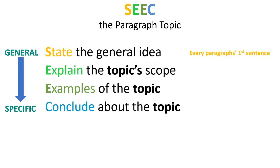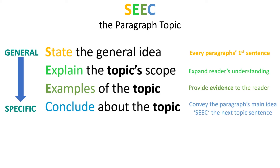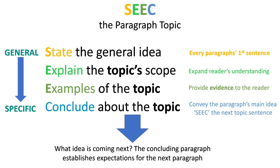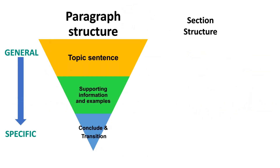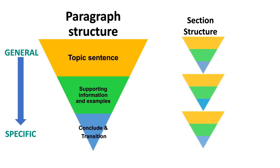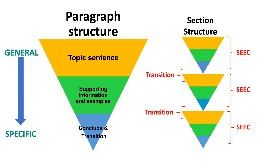Linking S-E-E-C to the three stages of paragraph construction, the topic should be stated in every paragraph's first sentence. Explanations help to expand the reader's understanding in supporting sentences. Examples provide evidence of the topic. And the conclusion conveys the paragraph's main idea while we begin to seek the next topic sentence. Conclusions are important because they control expectations about what idea is coming next, creating a logical flow for the reader to follow from paragraph to paragraph. Using this structure, every paragraph follows S-E-E-C to create a cohesive single idea adhered together via a transition.